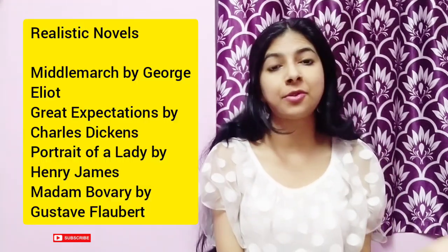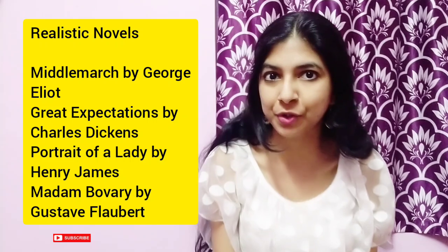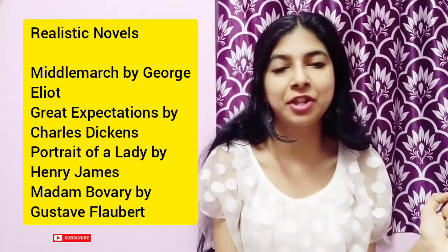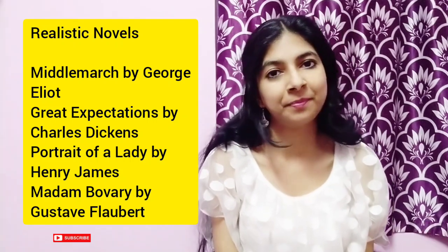Some great writers associated with realism are Charles Dickens, George Eliot, Henry James, and Gustave Flaubert. Some great realistic novels are Middlemarch by George Eliot, Great Expectations and David Copperfield by Charles Dickens, The Portrait of a Lady by Henry James, and Madame Bovary by Gustave Flaubert. These are some very famous realistic novels.